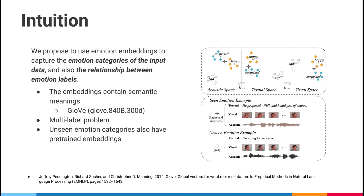Here is our work. We propose to use emotion embeddings to capture the emotion categories of the input data and the relationship between emotion labels, which means we use embeddings to represent the target emotions. As you can see on the right-hand side, we use the pre-trained GloVe embedding as the emotion values in the textual space. GloVe contains rich semantics of each word. For the other two modalities, we have two mapping functions that are learned end-to-end to map the emotion embeddings from the textual space to the other spaces.